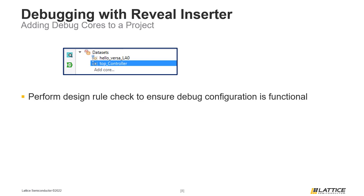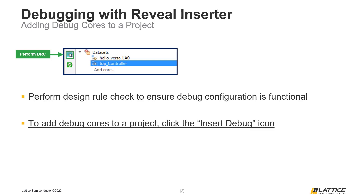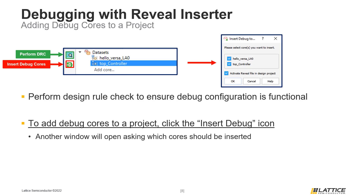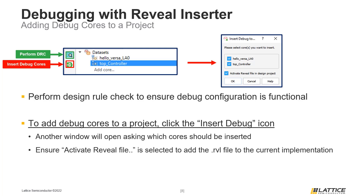To perform a DRC on the debug cores in Reveal Inserter, use the DRC icon as shown in the figure. Once users are finished configuring the debug cores and have successfully performed a DRC, the final step is to add the debug cores to the actual project. To insert the debug cores into the active implementation, use the Insert Debug icon. This will open an additional window asking users to specify which cores to insert. Users should ensure that the active Reveal file and design project option is enabled, then click OK to finish inserting the cores.